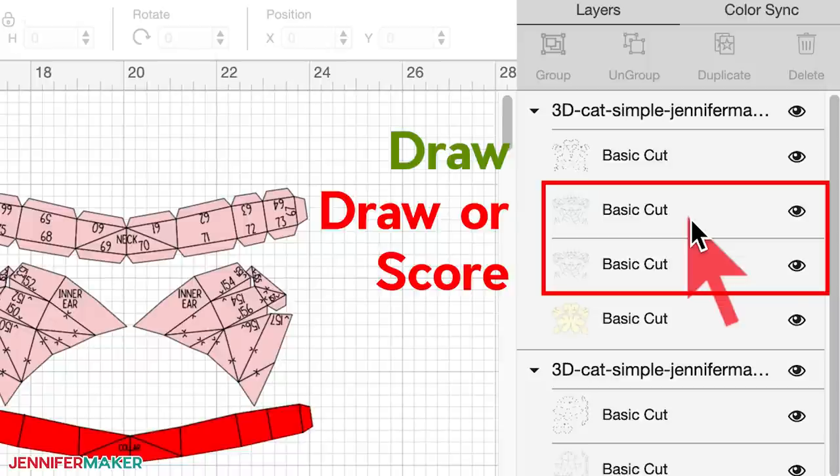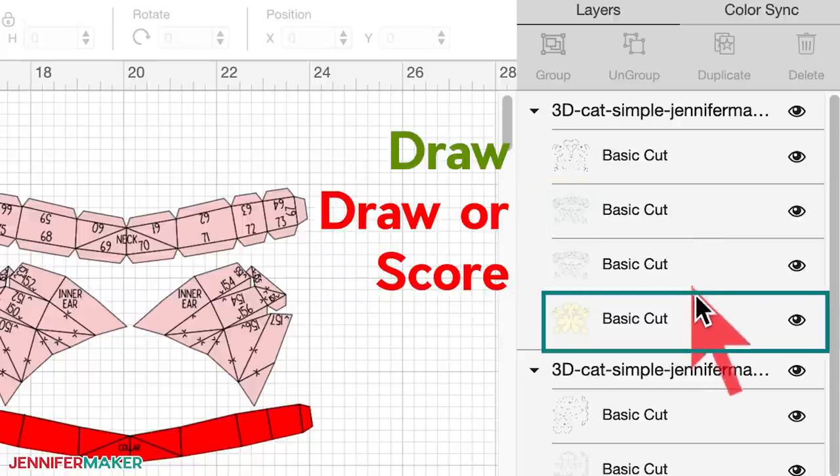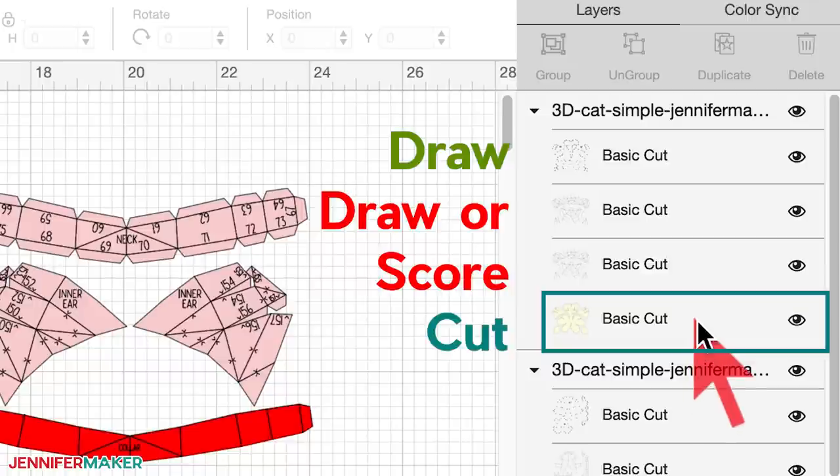Or you might choose to make both of these middle layers score layers. And you'll do this if you want to really make sure that you have a good, deep and strong score. This is particularly a good choice if you're using the scoring stylus instead of the scoring wheel. Doubling up on your score layer like this is a great way to improve the depth of your score lines, which makes it easier to fold. And the bottom layer is always going to be the cut layer.